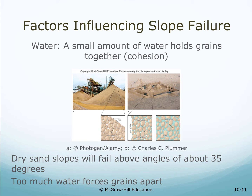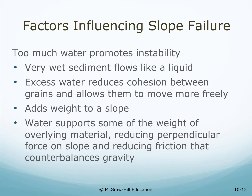A small amount of water holds grains together, making them a bit more sticky. Dry sand slopes will fail above angles of about 35 degrees. Too much water actually forces the grains apart and promotes instability — very wet sediment flows like a liquid. Excess water reduces cohesion between grains, allows them to move more freely, adds weight to the slope, and reduces the perpendicular force, thereby reducing the friction that counterbalances gravity.